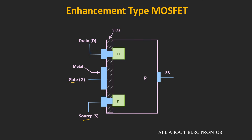Whenever we apply the control voltage between the gate and source terminal, the channel is formed between the drain and source terminal. The application of the control voltage enhances the number of charge carriers in this region, and due to that the channel is created — that is why this type is known as the enhancement type of MOSFET.